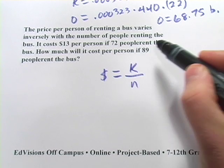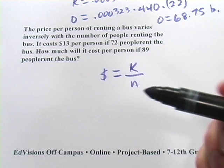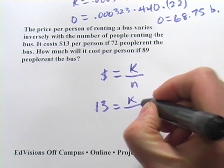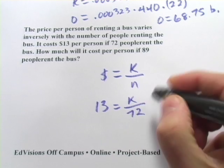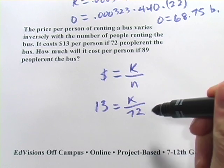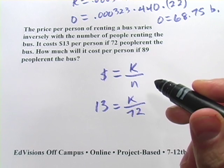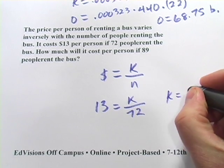It costs $13 per person if 72 people rent the bus. So $13 is our price, we have our constant, we have 72 people. So our constant of variation is going to be 13 times 72, which is 936.